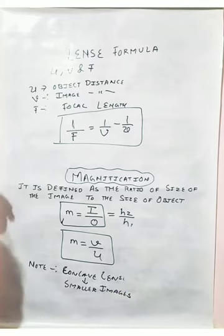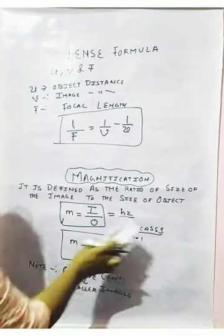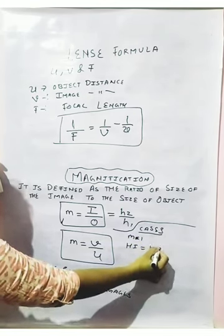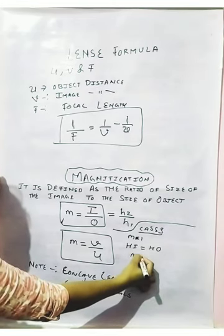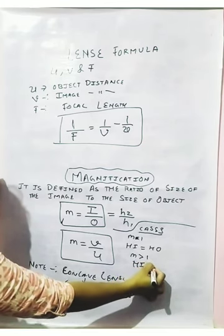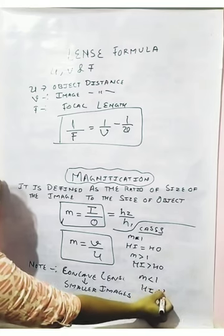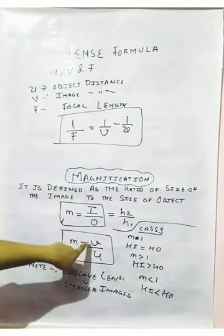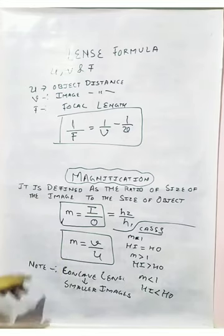Now let us discuss the cases of magnification. If M equals 1, the height of the image equals the height of the object. If magnification is greater than 1, the height of the image is greater than the height of the object. If magnification is less than 1, the height of the object is greater than the height of the image. The magnification is positive for lenses because the image is formed on the same side as the incident ray direction.